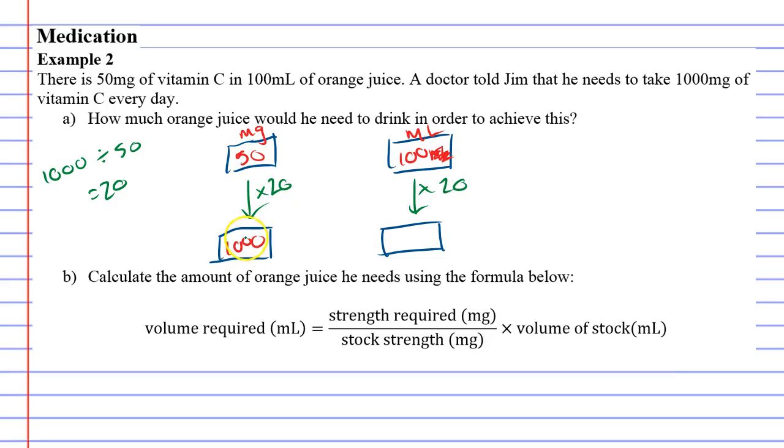You can check it: 50 times 20 equals 1000. So now we can find the last box. We'll do it in blue: 100 times 20 is 2000.